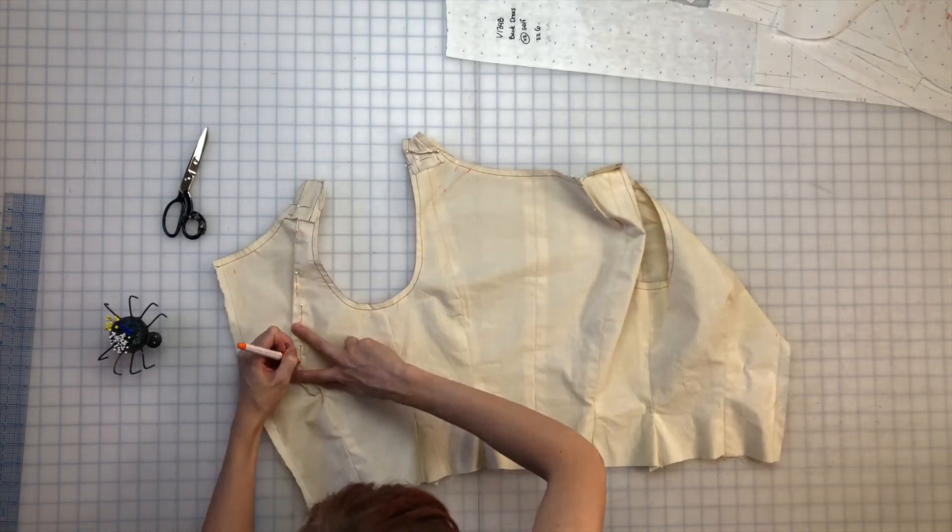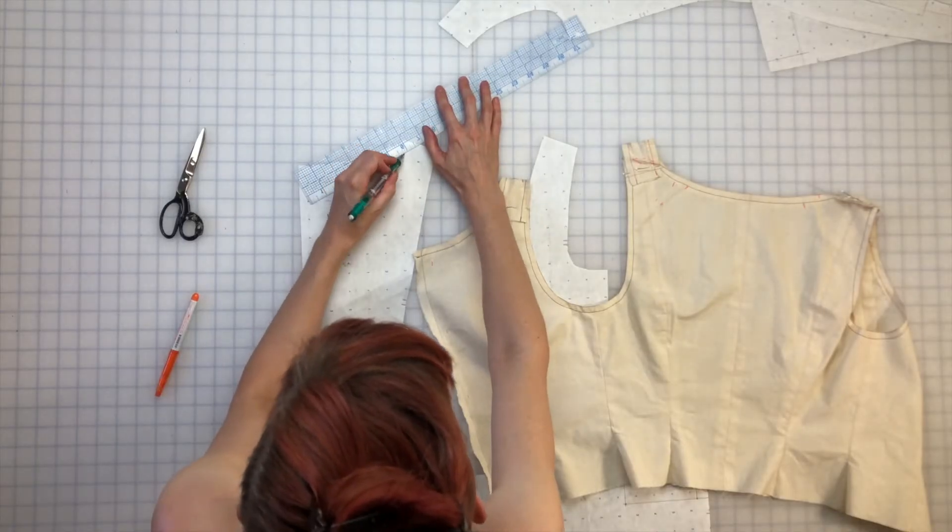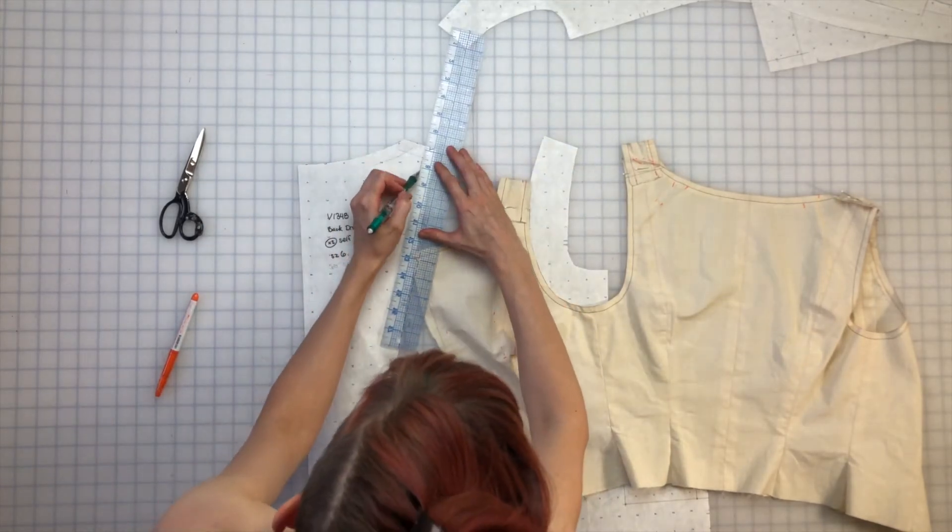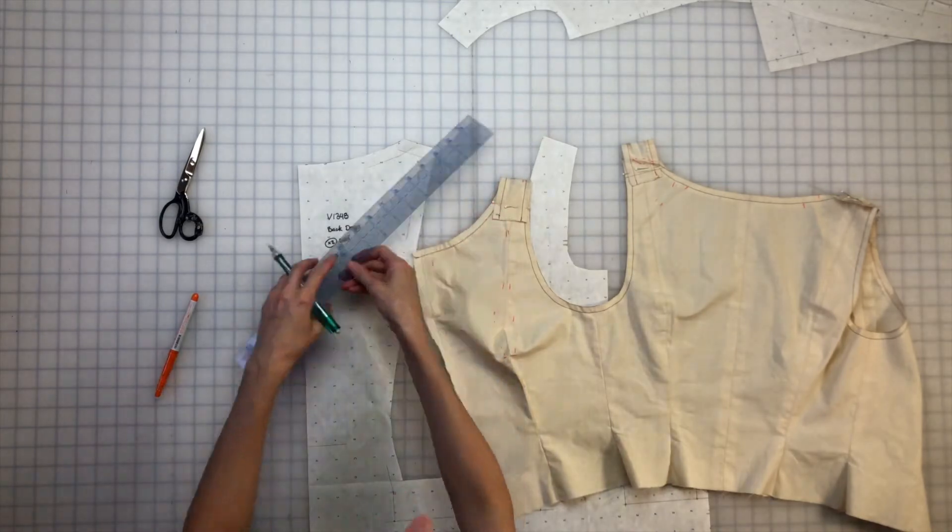Everything that you do to the shell, go ahead and do to the lining and facings at the same time. I mark out the seam allowance where I'm working because I want all of the adjustments to happen within the garment.